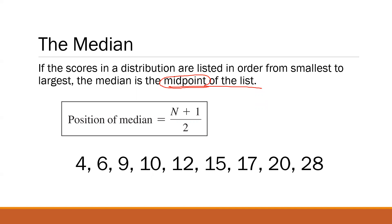To determine the median, there is a formula from Fox and Levin's textbook: n plus 1 divided by 2, where n is the number of scores. Since we're dealing with the same given, n is 9 plus 1 divided by 2 — that's 10 divided by 2, so the position of the median is 5. It doesn't mean that 5 is the median; it means the median is the fifth number. So you should arrange the given from least to greatest — otherwise you'll get an incorrect answer.